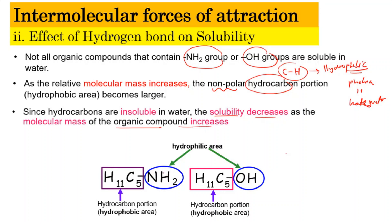For example, even though a molecule like C₅H₁₁NH₂ contains an NH₂ group that can form hydrogen bonds with water, the presence of a very large hydrophobic hydrocarbon portion reduces its solubility in water significantly. Hence, solubility decreases as the molecular mass of an organic compound increases.